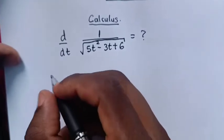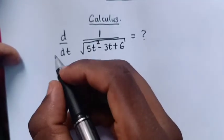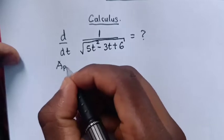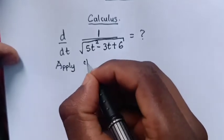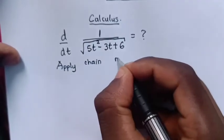Hello, how to find the derivative of 1 over square root of something with respect to t. First, we apply the chain rule.